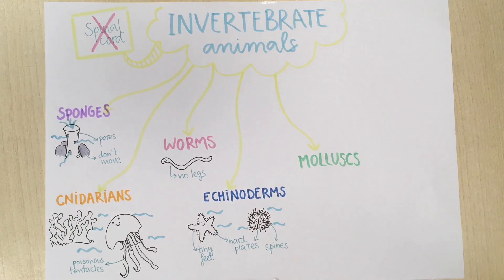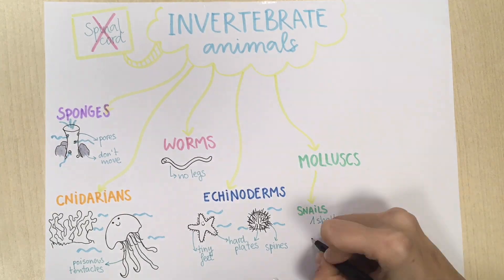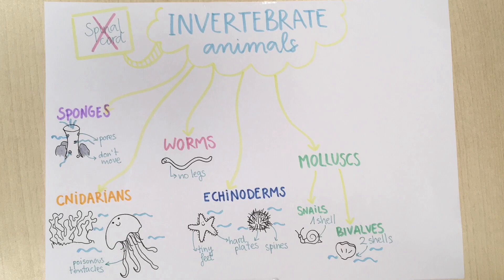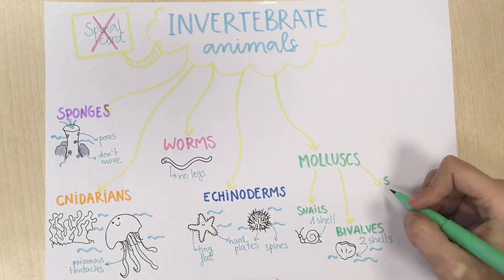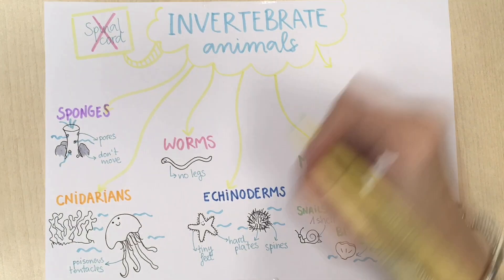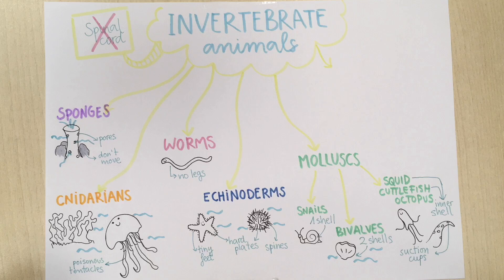Mollusks are also invertebrate animals and they can be divided into three groups. Snails protect their body with one spiral cell. Bybubbs have two cells to protect their body and they are aquatic. Squids, cattle fish and octopuses form the third group of mollusks. They are aquatic. Squids and cattle fish have an inner shell but octopuses don't. They have suction caps in their tentacles.